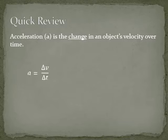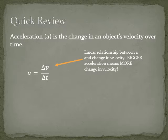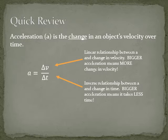The equation that we derived earlier was a equals delta v divided by delta t. Just as a reminder, that means there is a linear relationship between acceleration and delta v because it's on the top of that fraction, so a larger acceleration means an object's velocity changes more. There's also an inverse relationship between acceleration and delta t, which means that a lot of acceleration happens when an object changes velocity in a very small amount of time.